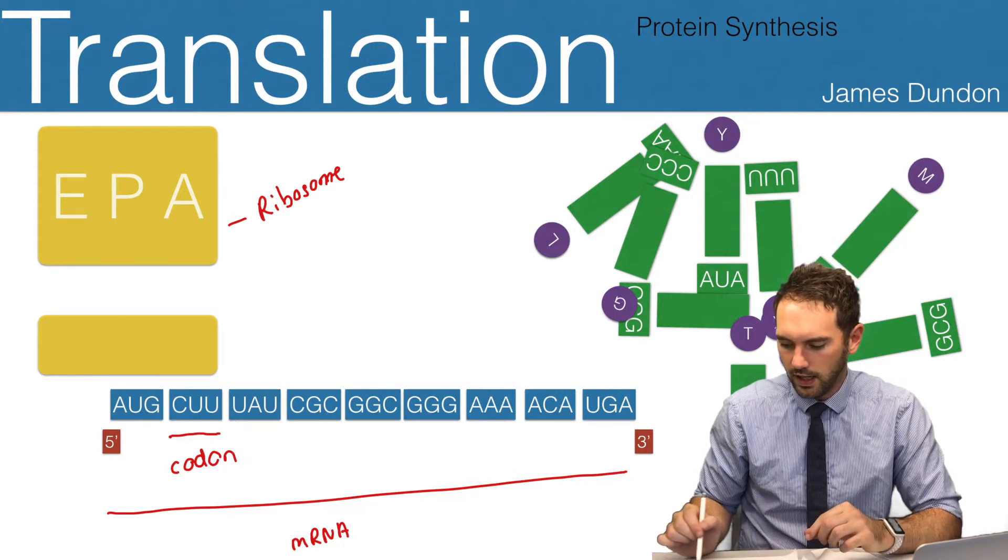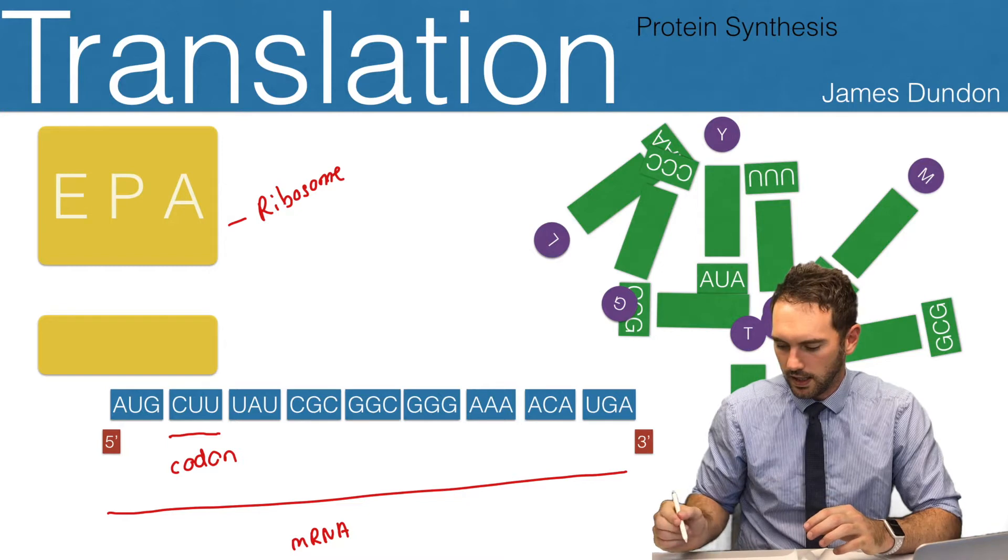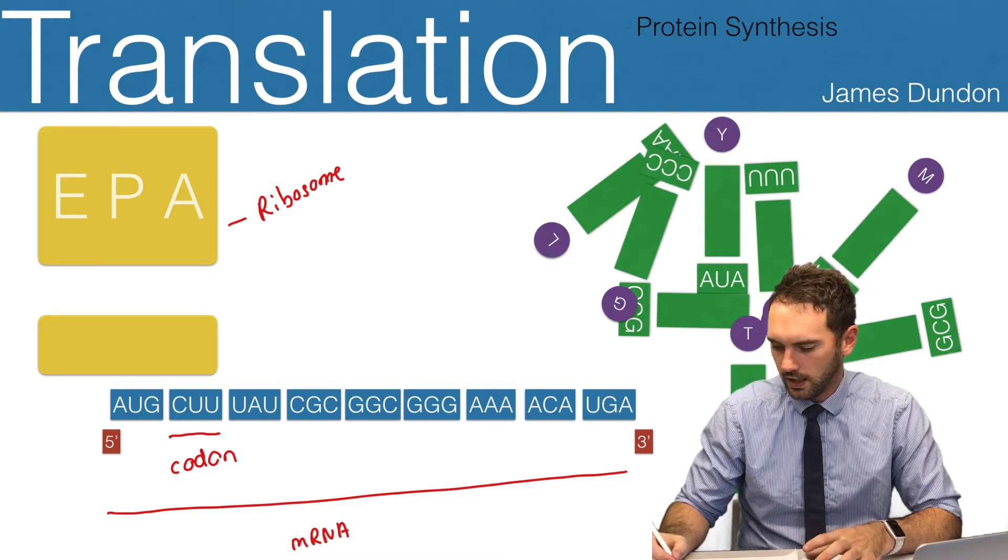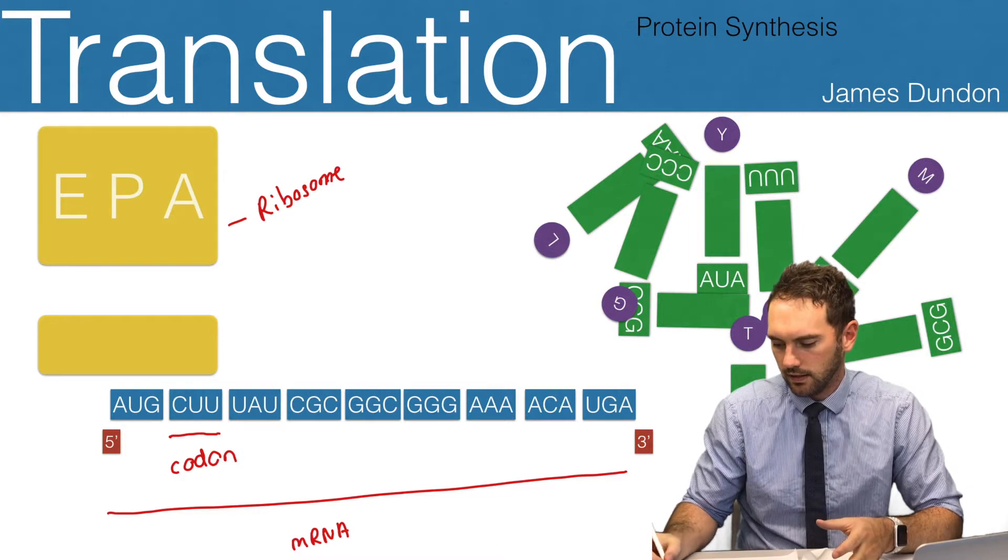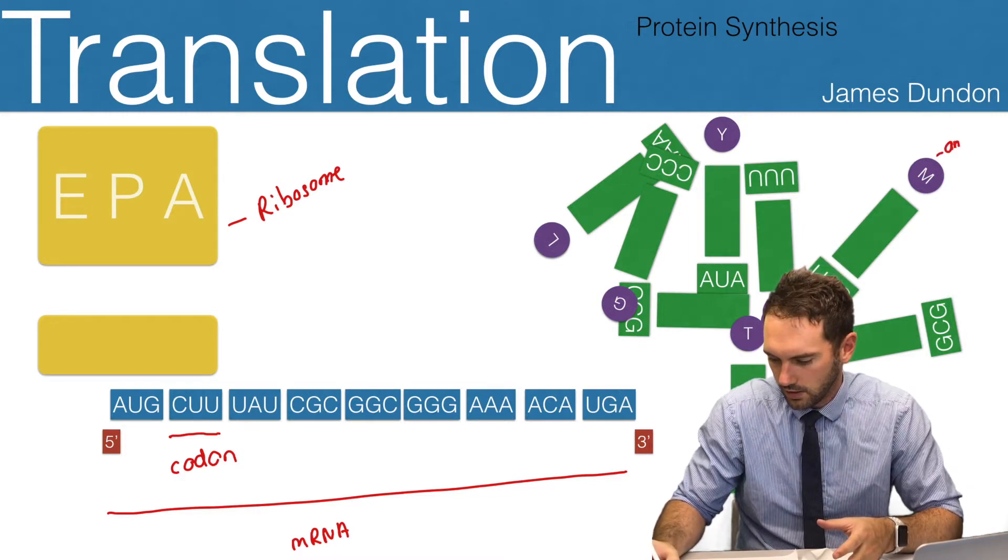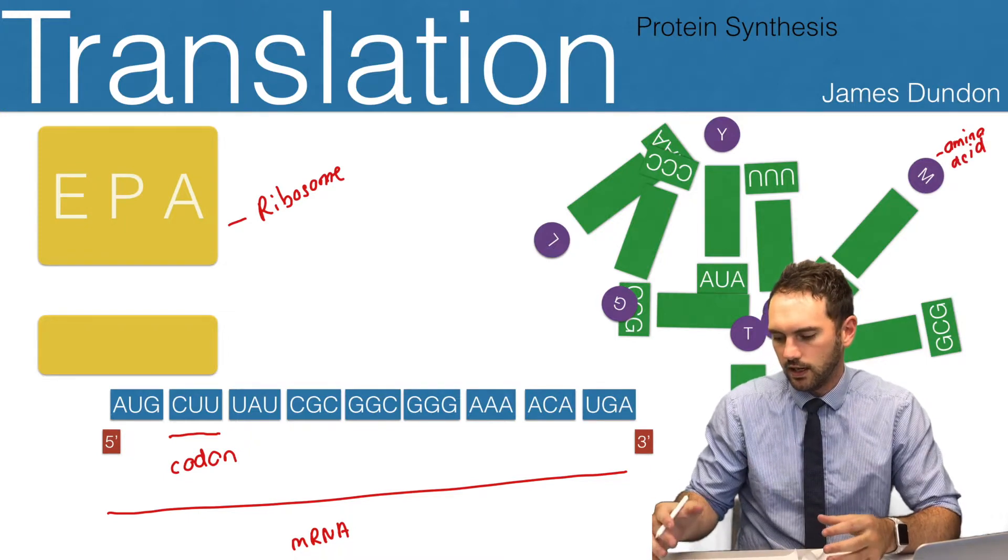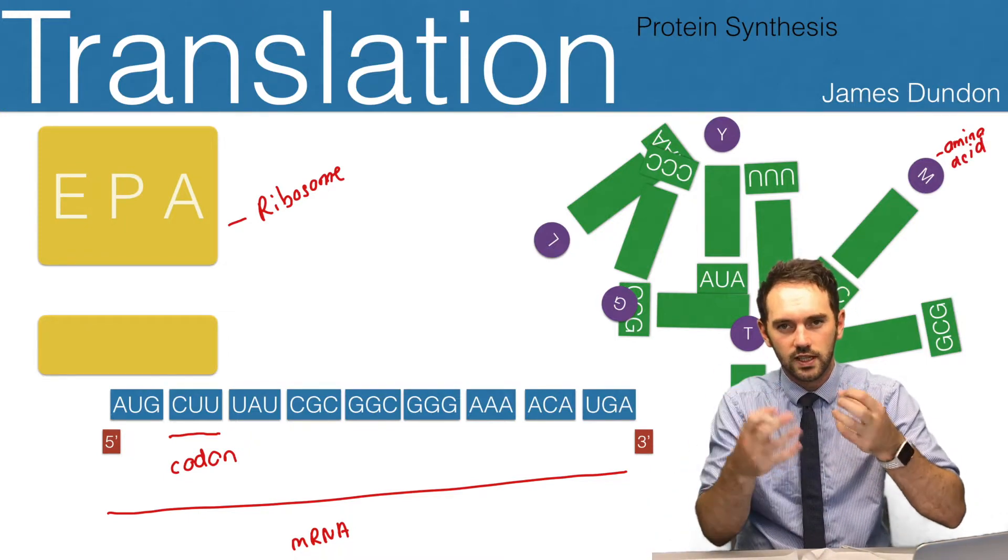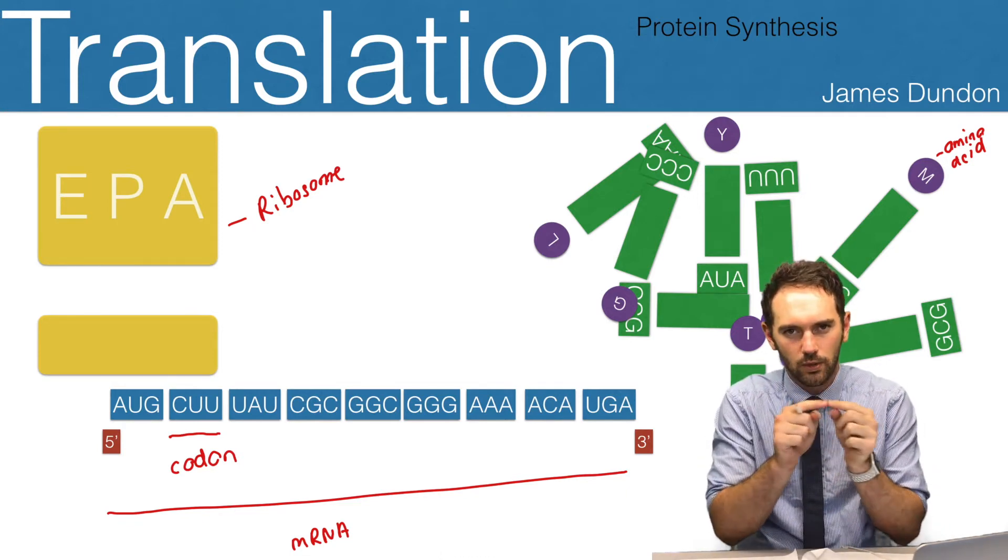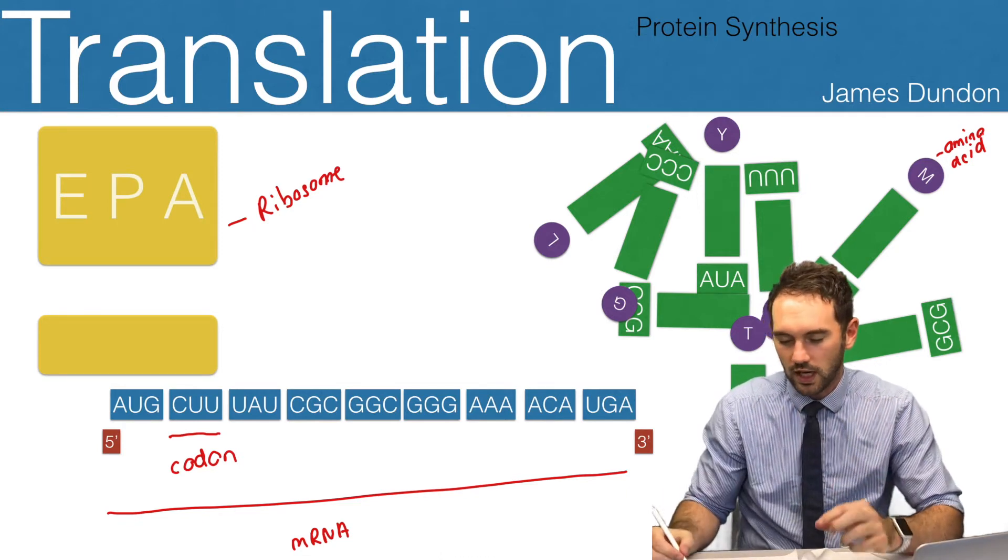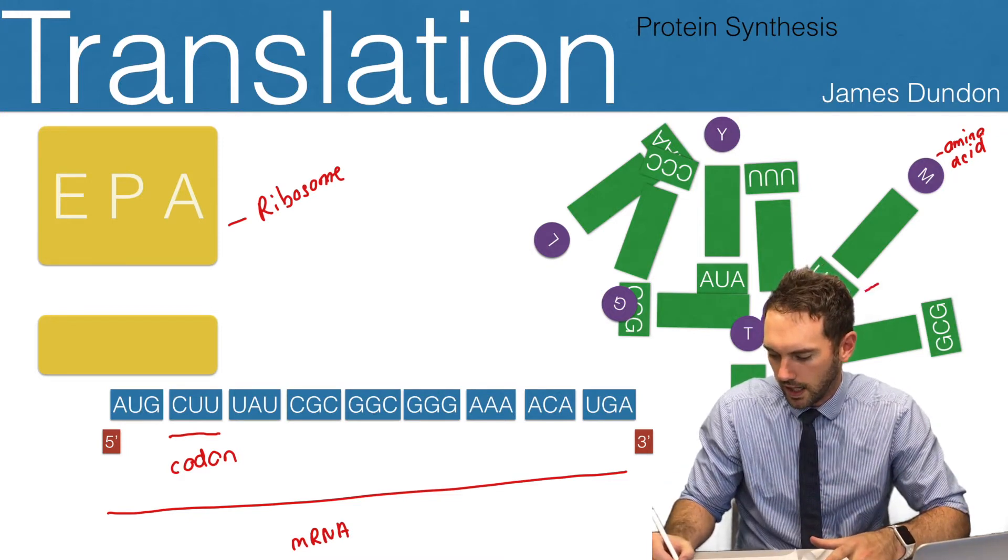On the side here we have some transfer RNAs. One transfer RNA is made up of RNA itself and contains an amino acid, which is this circle in purple. It's this RNA string that's all folded up into a specific shape, and on the bottom is this exposed section of RNA which has three bases exposed, which we call the anticodon.